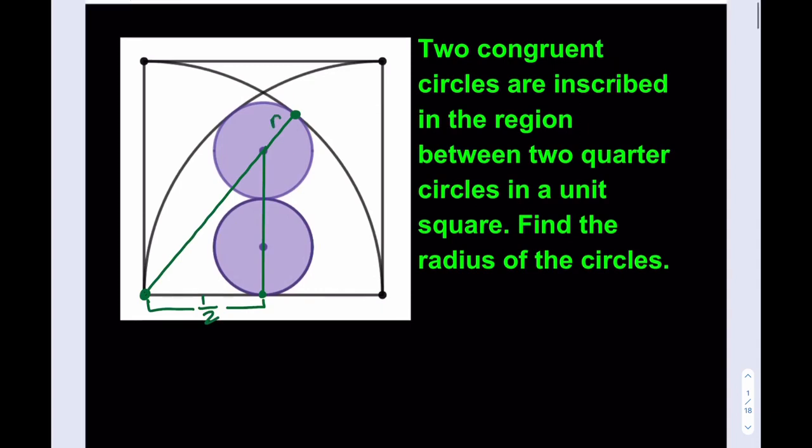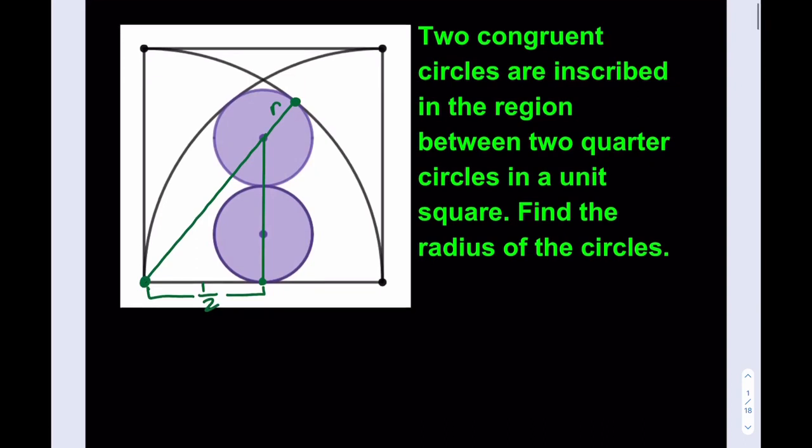Now, we know that this is r. Well, that's what we're trying to find. Let's call this r, and let's call this r, and let's call this r. Beautiful.